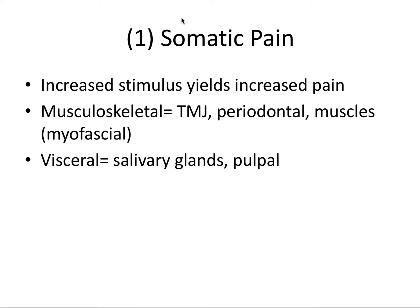We're going to talk about four major categories of pain, and they all fit in the continuum of axis one and axis two factors. The first category is somatic pain, where you have an increased stimulus yielding an increased pain. This is what you typically would view as our day-to-day dental patient in pain. So we have musculoskeletal pain, which involves the TMJ — we'll have a whole video on temporomandibular disorders in the next video — periodontal pain, and muscular pain, which is also called myofascial pain. We also have visceral pain, which involves the salivary glands and the pulp, the nerves of each individual tooth.